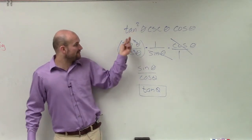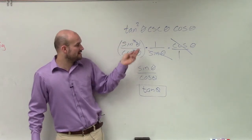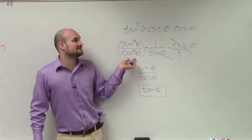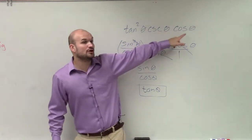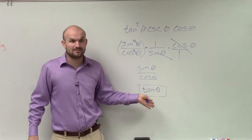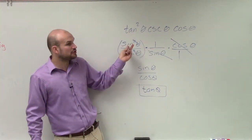I looked at this and I said, all right, if I rewrite tangent as sine over cosine, I now know that cosine is going to be in the denominator. I already have a cosine in the numerator, so I know those will divide out, right? And then I'll have sine in the numerator.